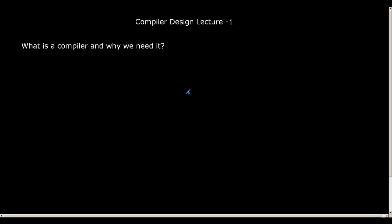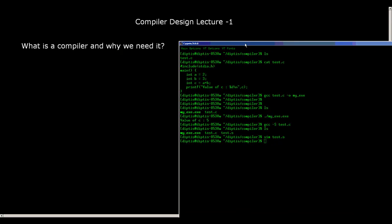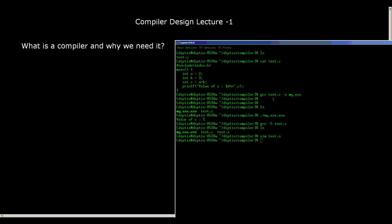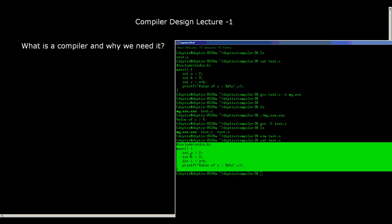To discuss this, let us try to write a small C program in a software called Cygwin. Here is my C program. You can see that test.c contains the following code. I have two variables a and b, a contains the initial value 2, b contains the initial value 3, and my program is just adding the two variables and storing it in another variable called c and printing the value. It is a very small program.